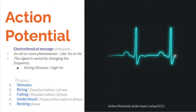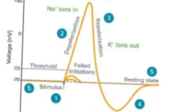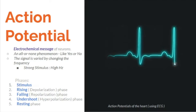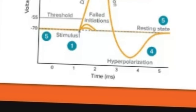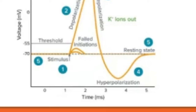Phase three: the falling phase or repolarization — membrane repolarization results from rapid sodium channel inactivation and a large influx of potassium ions from activated potassium channels. Phase four: the undershoot or hyperpolarization phase — hyperpolarization is a lowered membrane potential caused by a flux of potassium ions and closing of potassium channels. Phase five: the resting state, when membrane potential returns to resting voltage before the stimulus occurred.